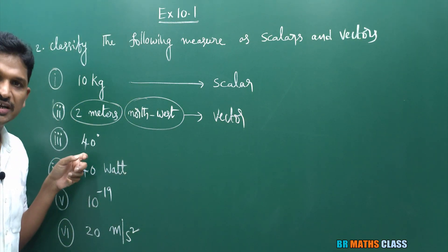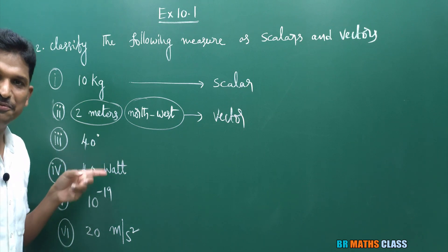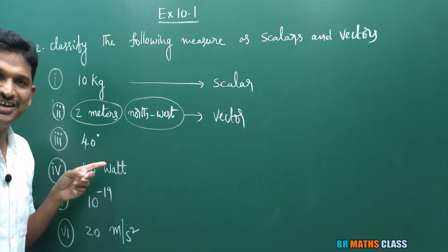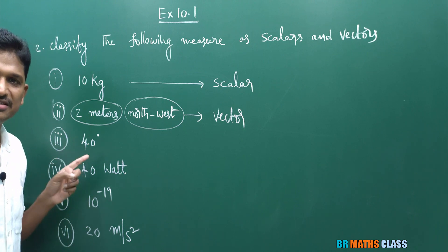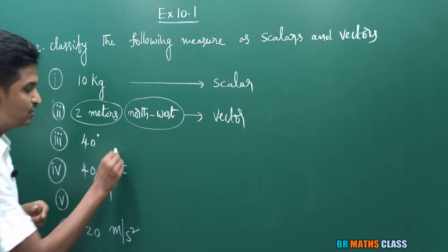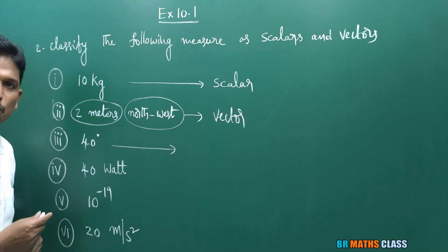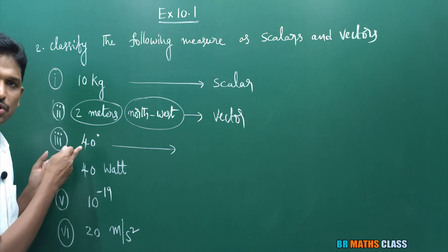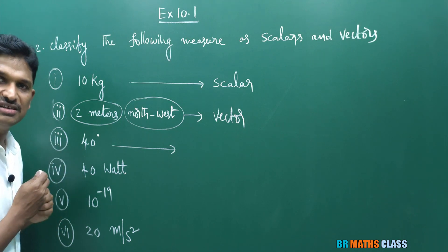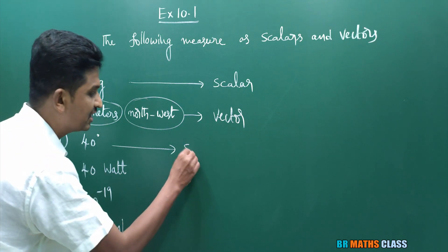Observe 40 degrees. Can you observe any direction here? No. It is just a magnitude — 40 degrees is just a magnitude. So this is a physical quantity having only magnitude but no direction. Therefore, 40 degrees is a scalar.